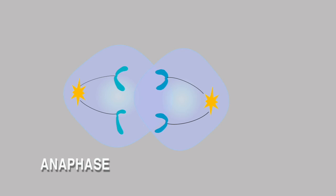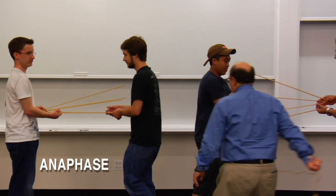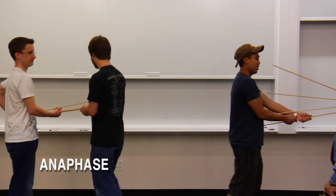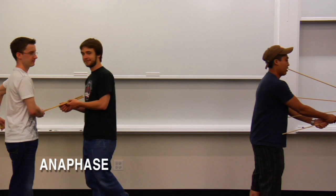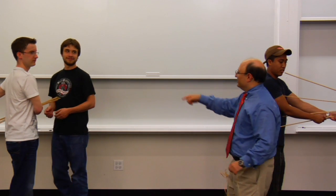Then at the next stage, known as anaphase, the two sister chromatids are separated from one another so that they can each pull along their own set of microtubules to the two tips.